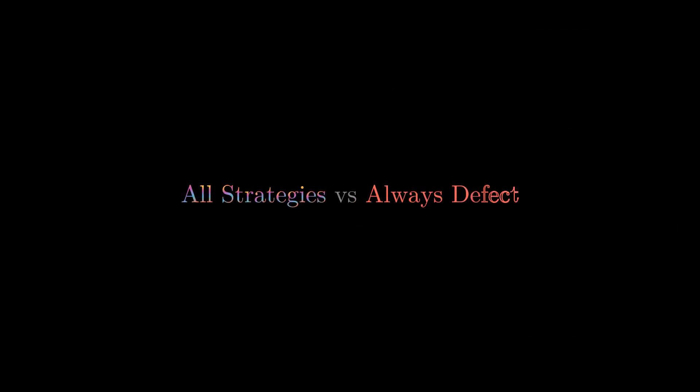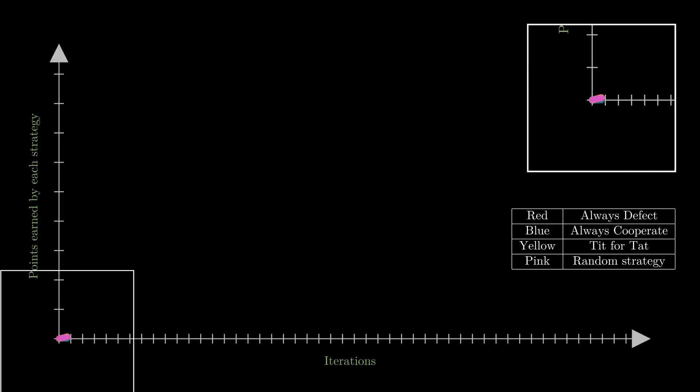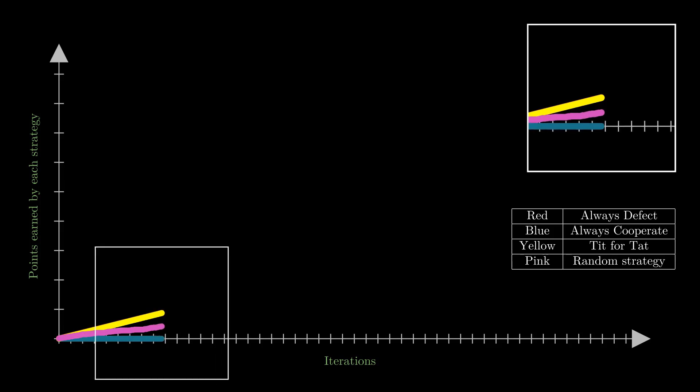What if all other strategies are pitted against always defect strategy? In that case, I guess you'll understand why tit for tat strategy will be indistinguishable from always defect strategy. Thus red curve and yellow curve will overlap each other. Always cooperate strategy will earn no single point as it always will be a sucker. Random strategy, sometimes defecting, sometimes cooperating will fall somewhere in the middle.